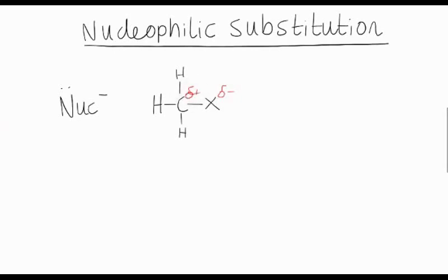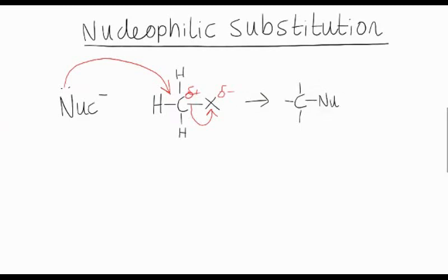The lone pair of electrons on the nucleophile is attracted to the delta plus carbon and attacks it. That arrow shows a movement of the electron pair, and that causes the carbon-halogen bond to break — we draw a second arrow. As a result, we see in the product that the nucleophile has taken the place of the halogen atom, forming a new bond to the carbon, and we kick out the halide ion as a negative ion.